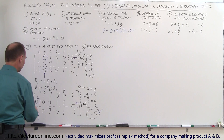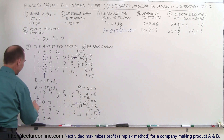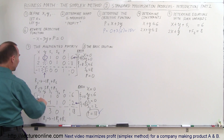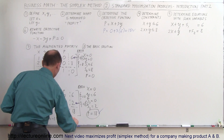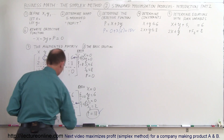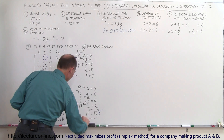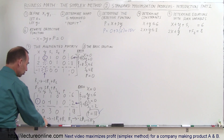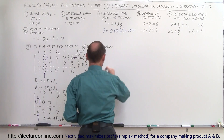To eliminate the other entries in the x column, we replace row 1 with negative 1 times R2 added to R1, and replace row 3 with negative 2 times R2 added to R3. Row 2 (the pivot row) stays unchanged: 1, 0, negative 1, 1, 0, and 2.